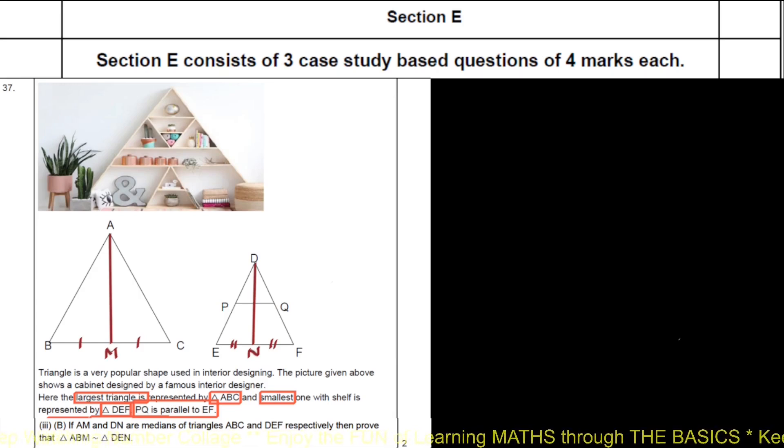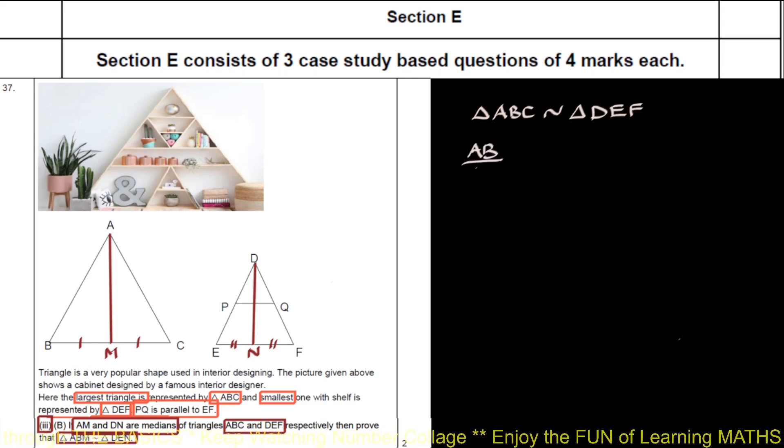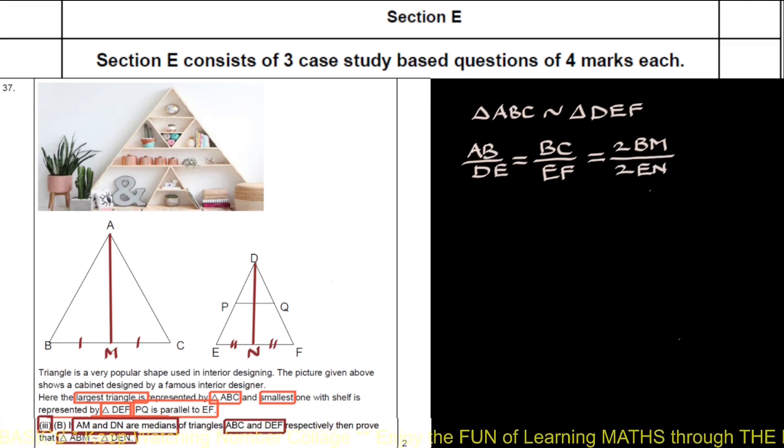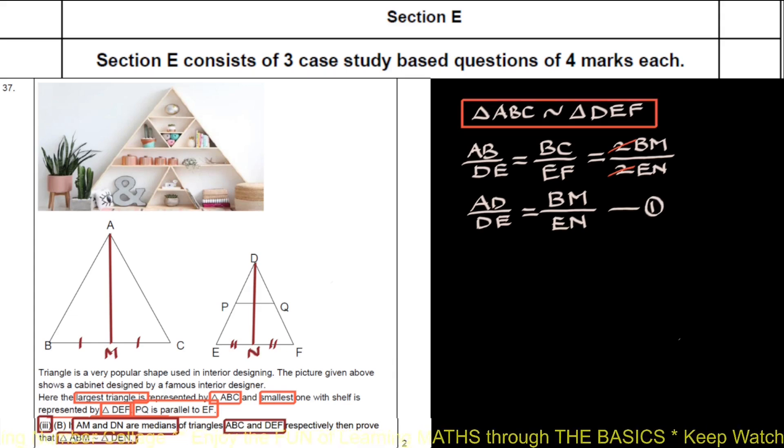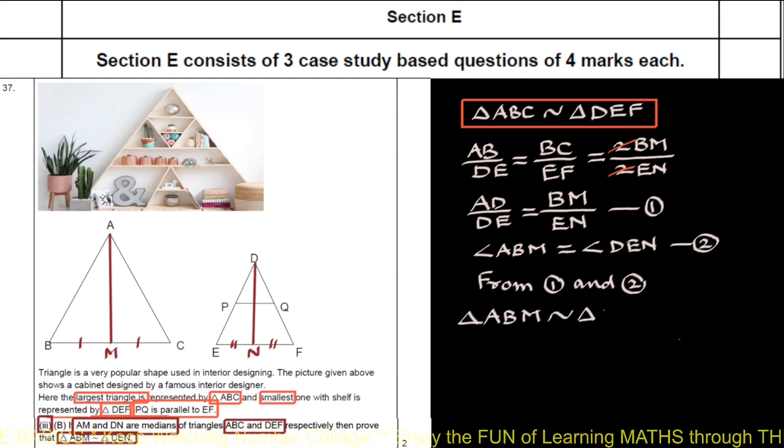Let us solve third sub question. AM and DN are medians of triangle ABC and triangle DEF. We have to prove triangle ABM is similar to triangle DEN. Triangle ABC is similar to triangle DEF. Therefore, AB upon DE equals BC upon EF. BC is twice BM because AM is median. EF is twice EN because DN is median. Cancelling 2, we get AB upon DE equals BM upon EN. We name this 1. Moreover, since triangle ABC is similar to triangle DEF, angle ABM equals angle DEN. We name this 2. So from 1 and 2, triangle ABM is similar to triangle DEN by SAS test of similarity. Hence proved.